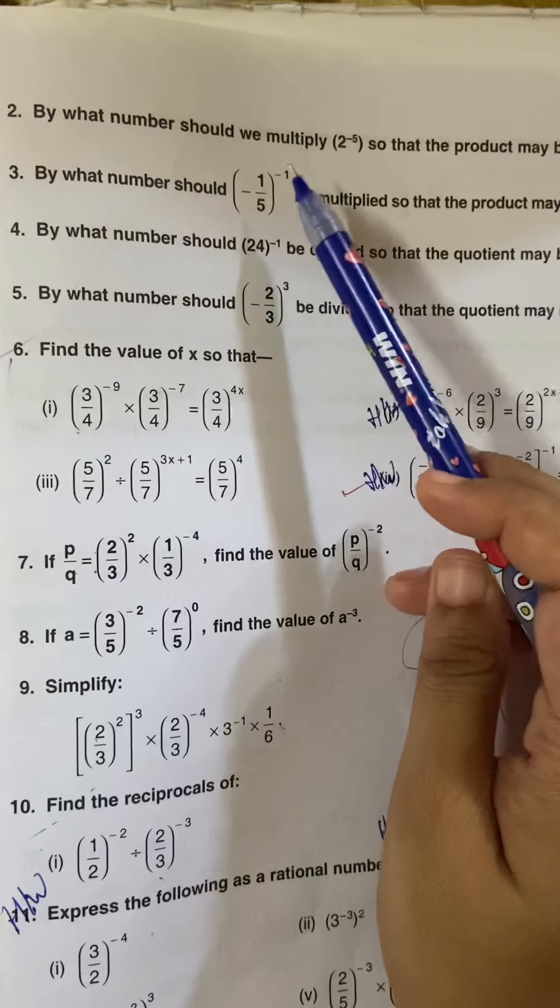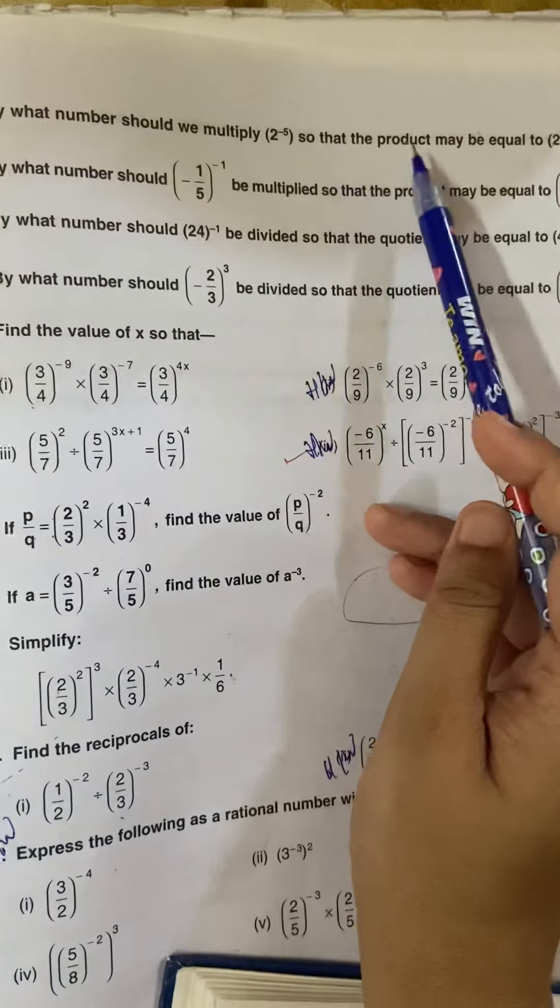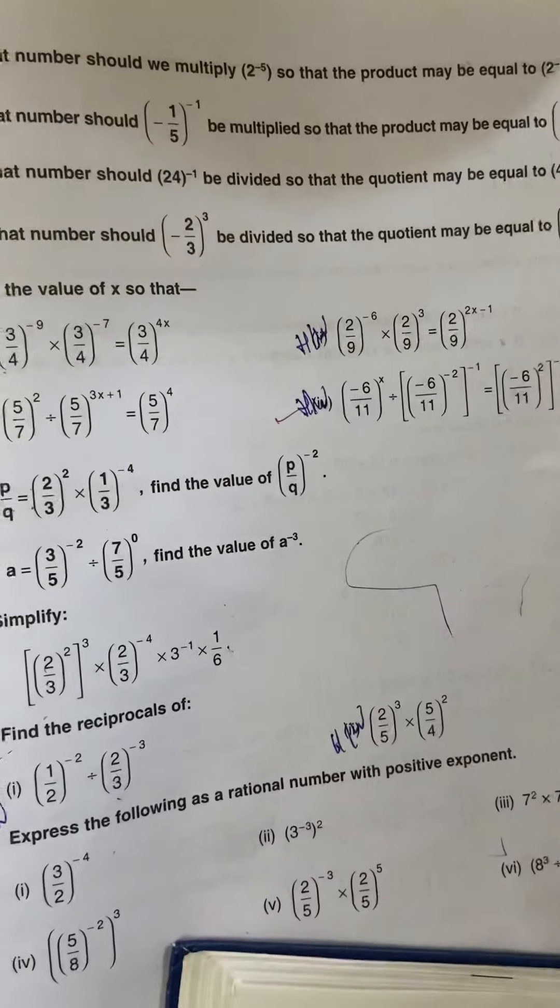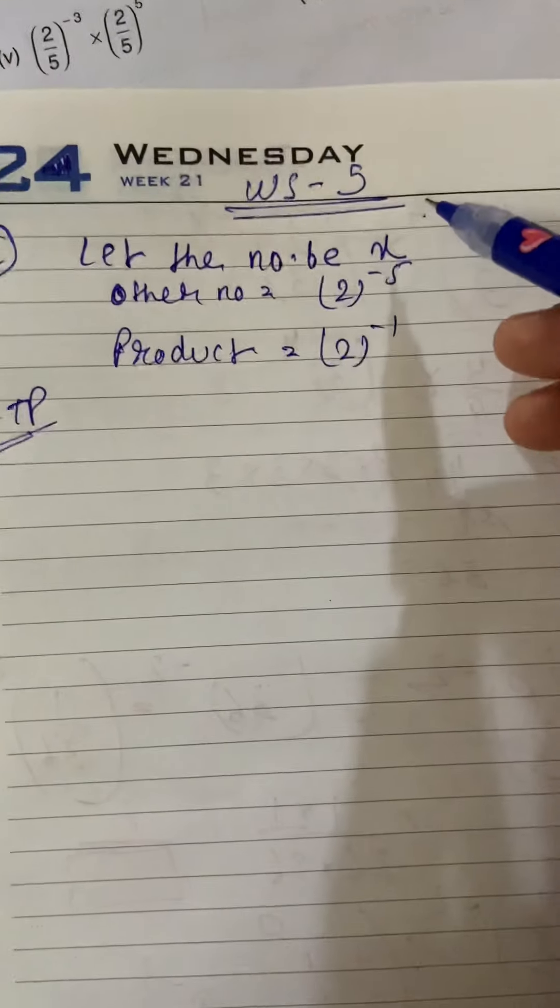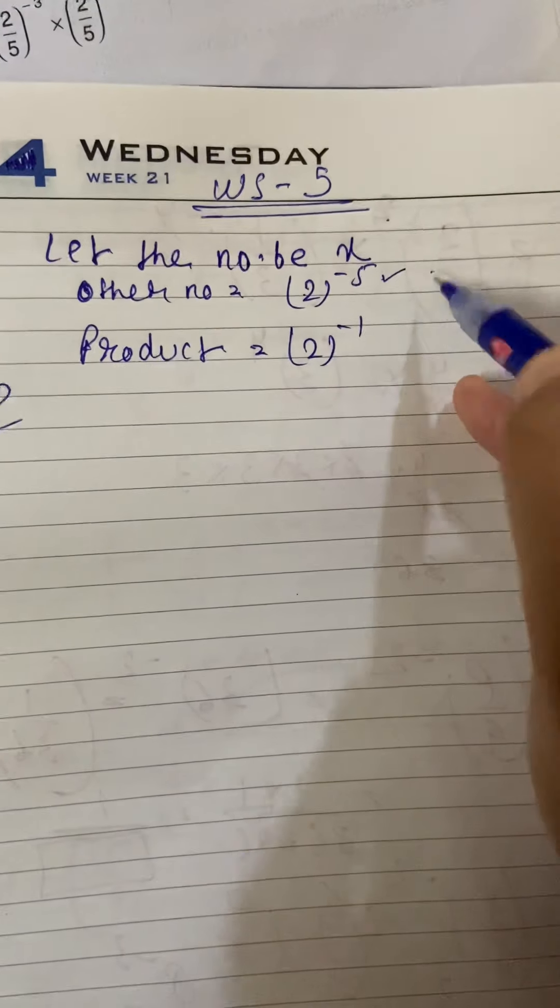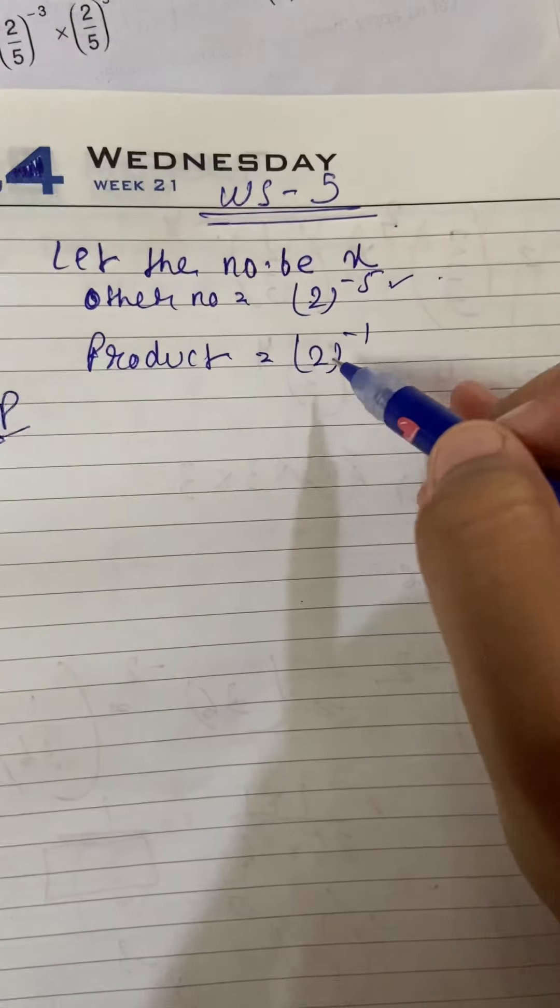By what number should this be multiplied so that the product may be equal to this? So, ek number dhoondna hai. Let the number be x. Other number kis se multiply kar rahe hai? 2 to the power minus 5. Aur product kya aega 2 to the power minus 1.